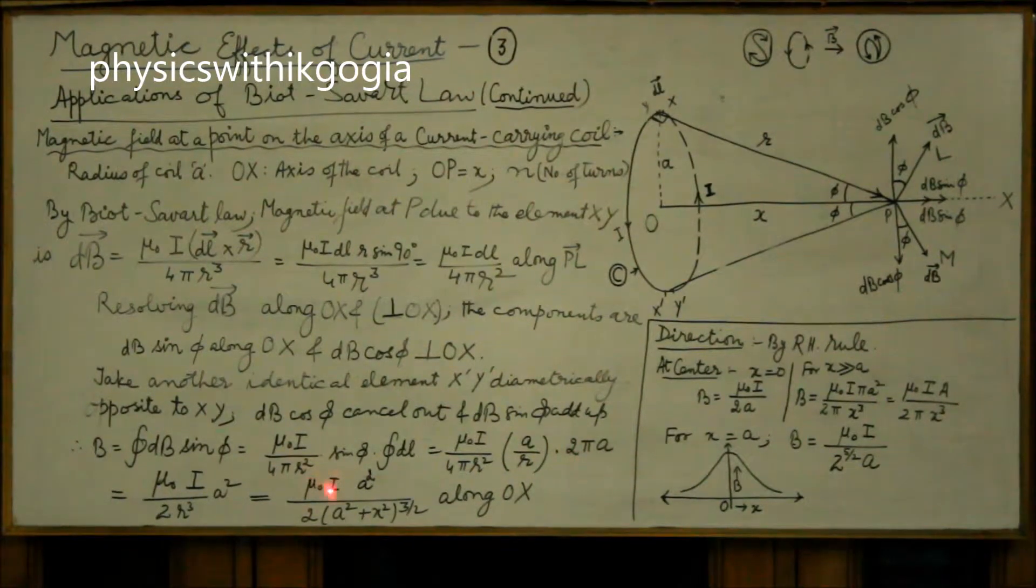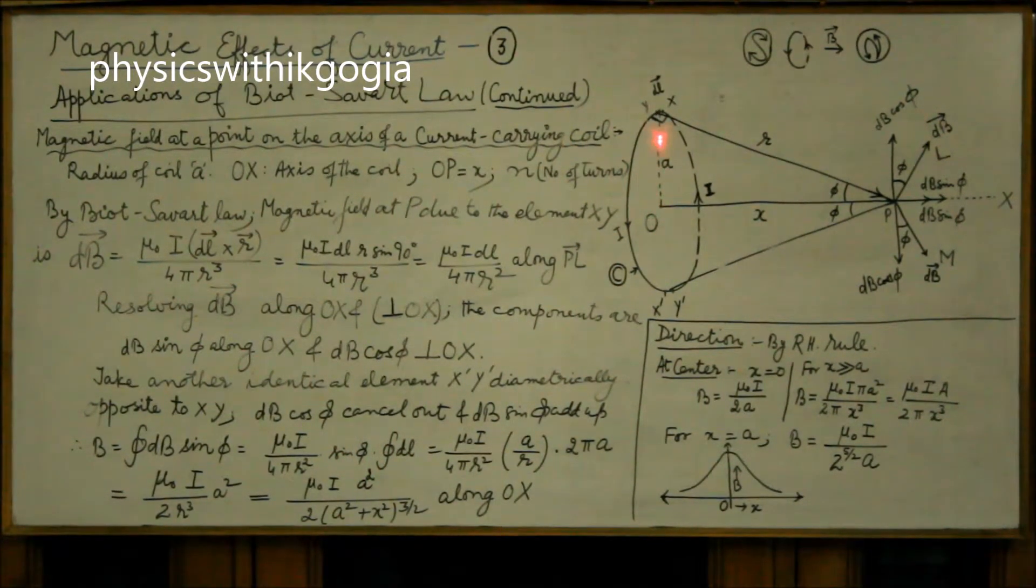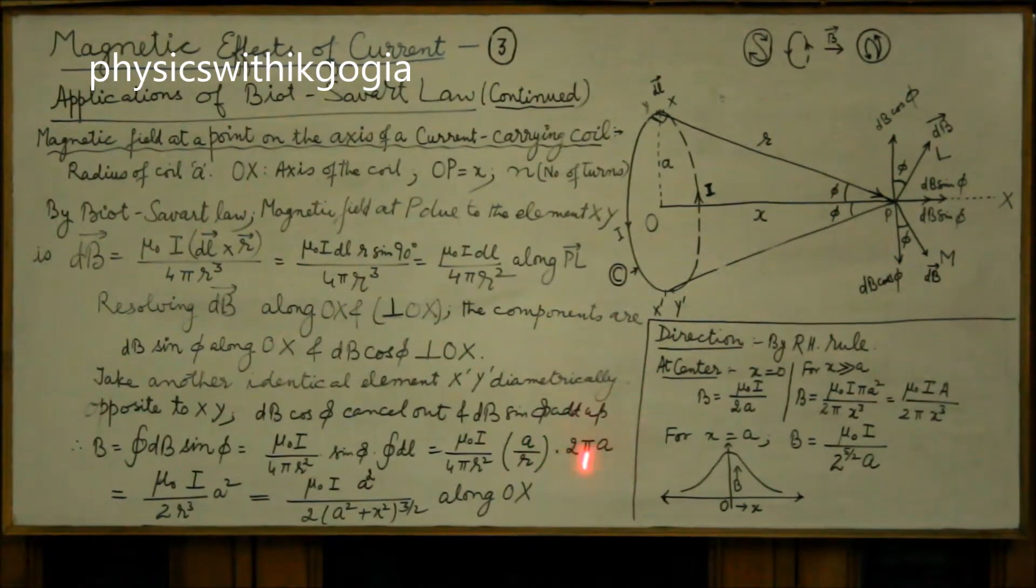So you get this expression μ₀ i over 4π r² sin φ is a by r from the diagram. The perpendicular a divided by r, this is the value of the integral which simplifies to μ₀ i over 2 r³ into a².